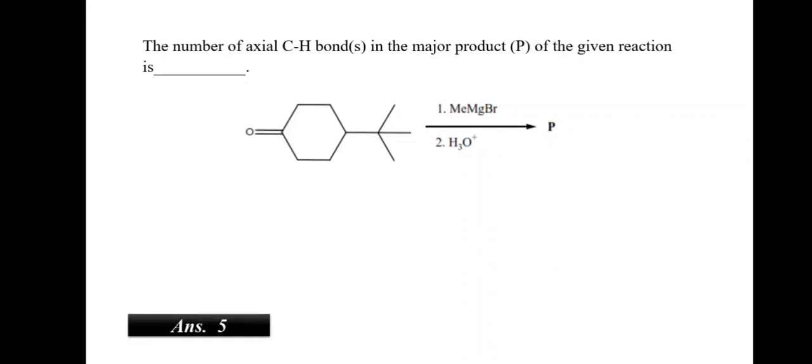The number of axial C-H bonds in the major product of given reaction is. When this reaction occurs, we would see that with the Grignard reagent and in an acidic medium, 5 axial bonds can be created. Thus, the answer would be 5.